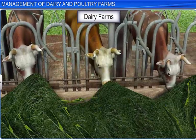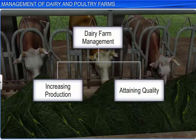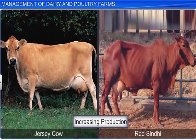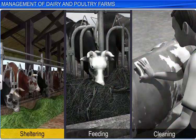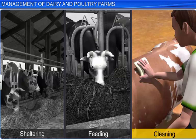Dairy farms rear animals for milk and milk products. The management methods used to increase production without compromising on the quality of milk is called dairy farm management. One of the key factors for increased milk production is breed selection. Good breeds have high yielding potential and high resistance to disease. Apart from the breed, proper sheltering, feeding and cleaning of cattle are essential to obtain high yields of milk.